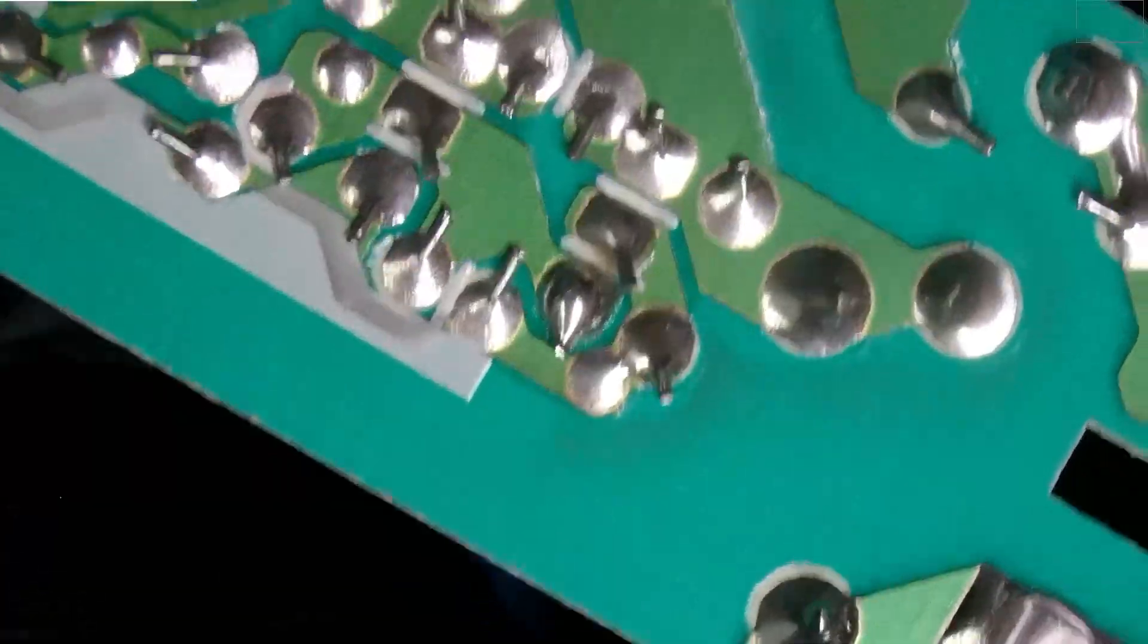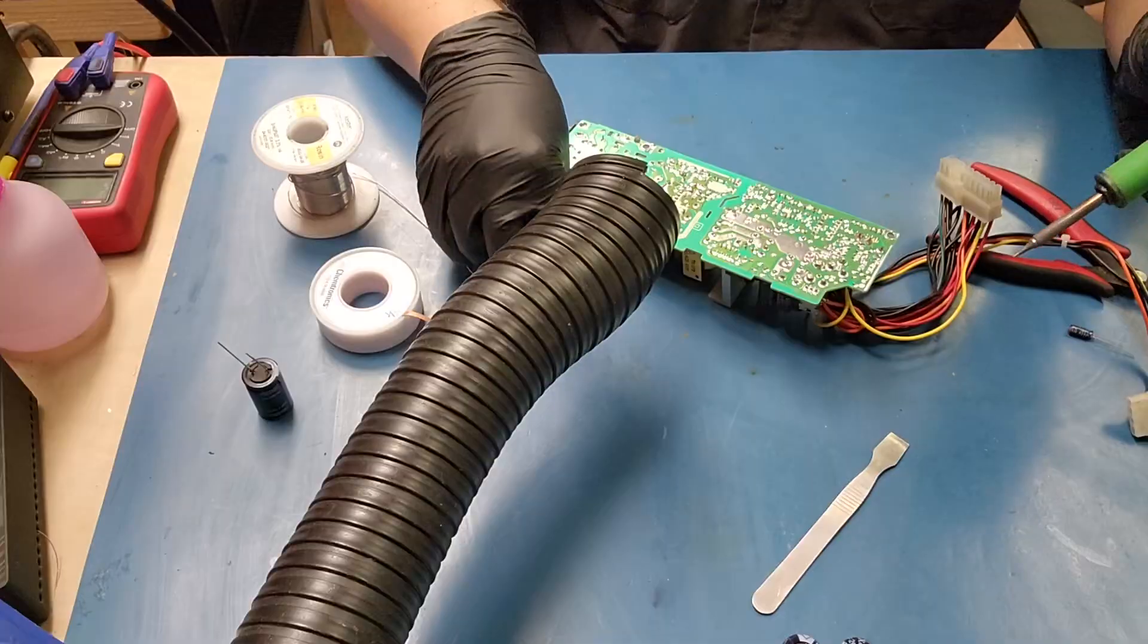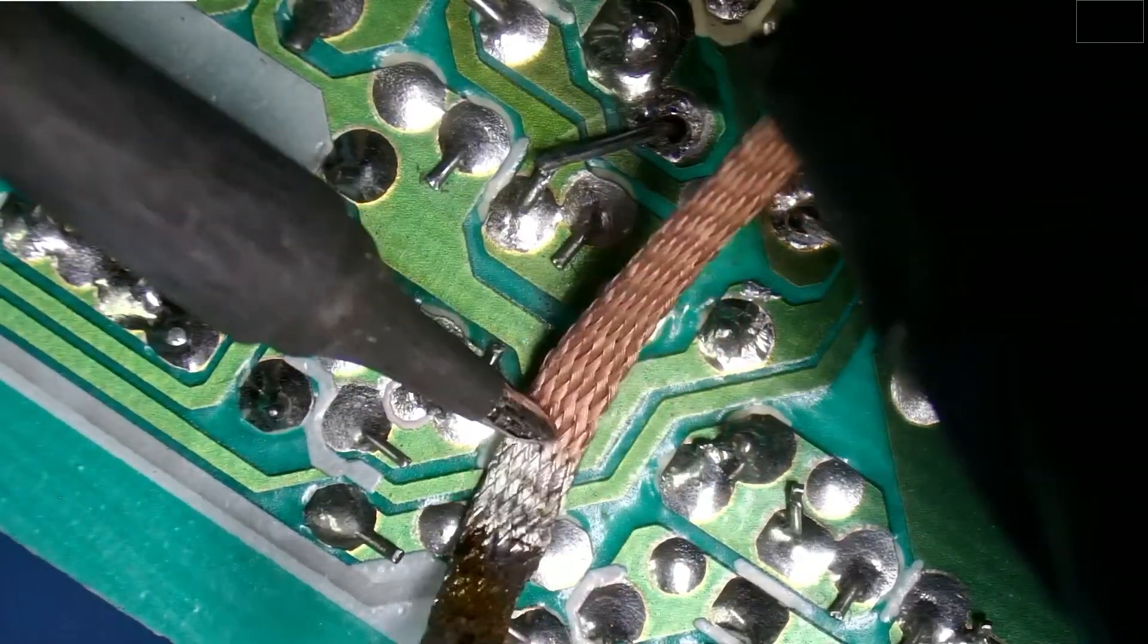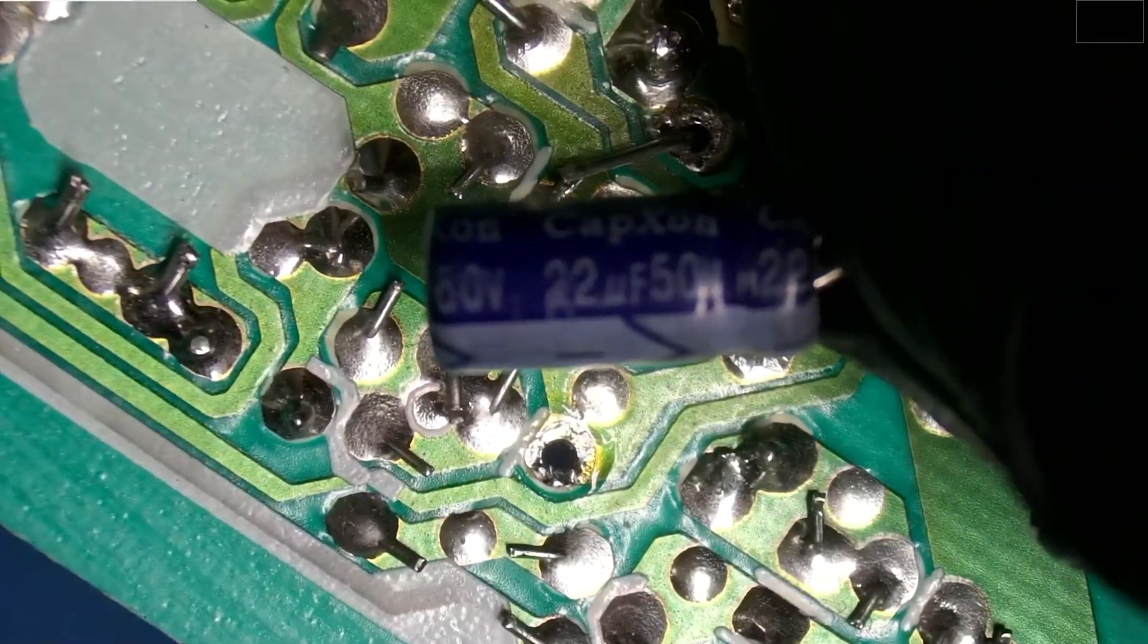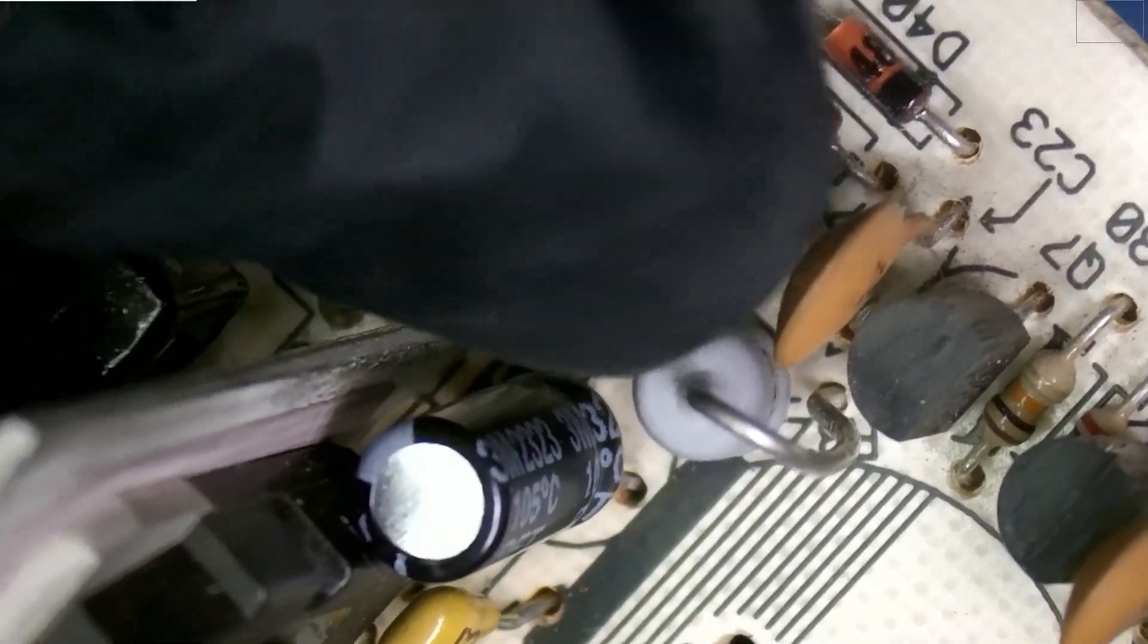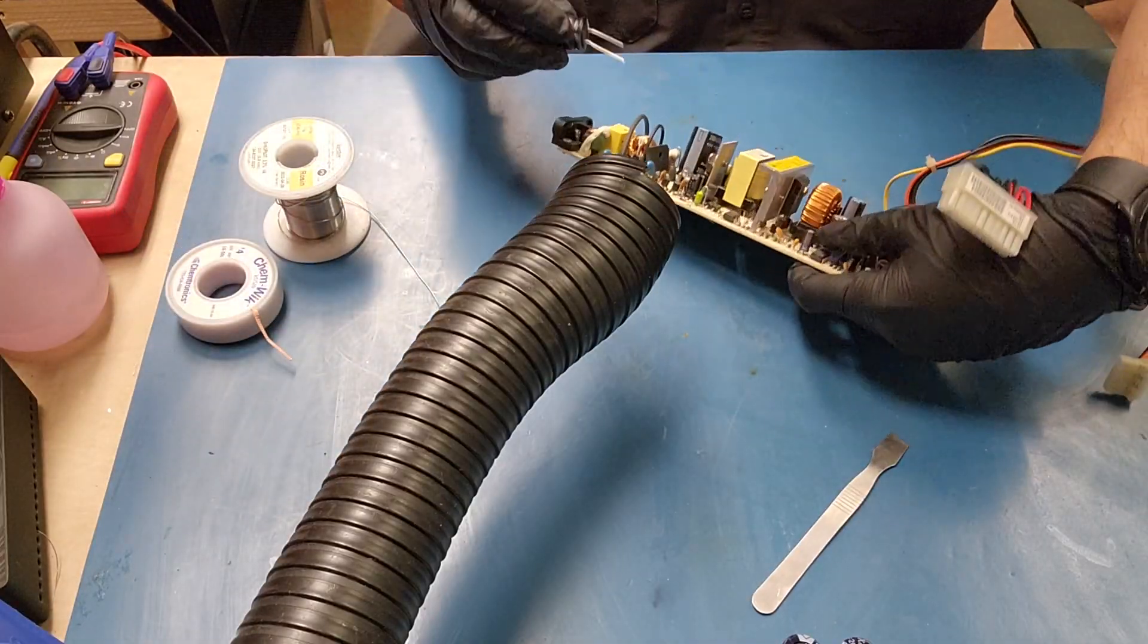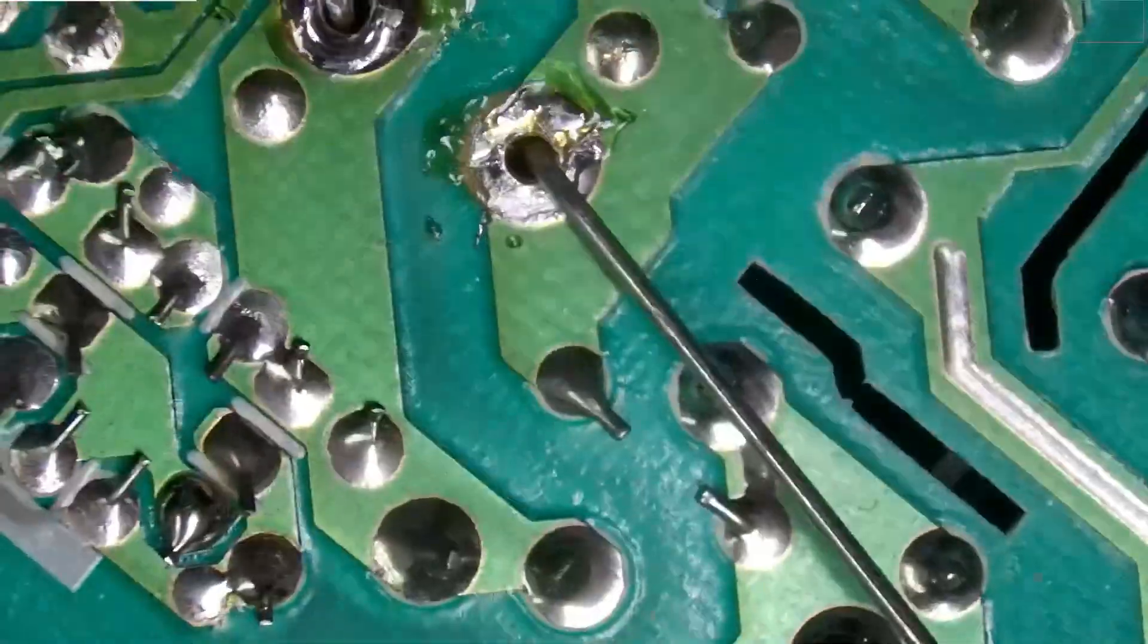And then we have another one right beside it that needs to be desoldered. And that one just pulled out, no problem. And this one is a 22µF 50 volt. And that goes right in there. Fold over the legs. Now we can put our big cap back in. Fold the legs. I think at this point we'll go ahead and solder everything up on this side.